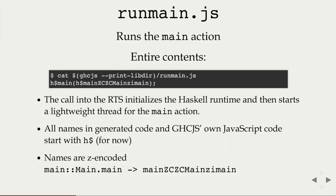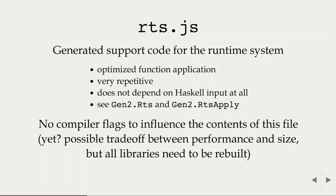So it's possible to re-implement foreign C code in JavaScript, and you also get it prefixed. Then there's rts.js — the file that stays mostly the same. It's generated by the gen2.rts and gen2.rtsapply modules of GHCJS. It's really lots of support functions for the runtime system — things like: apply this function to three arguments with total size four, or create a partial application of a certain size. These functions have several variants, and there's custom codegen to generate this.